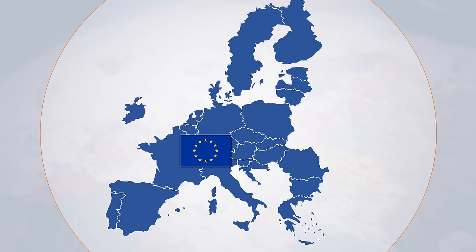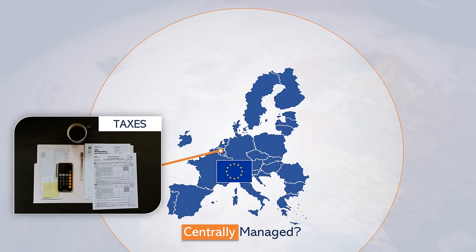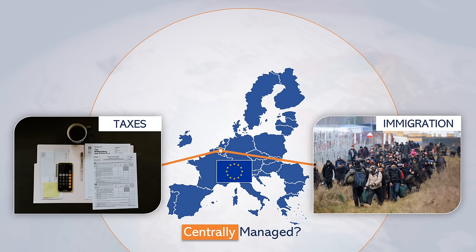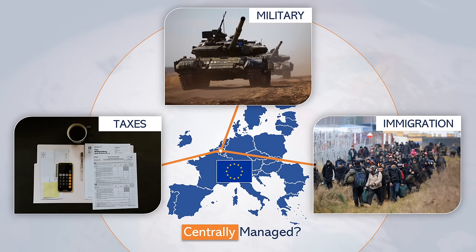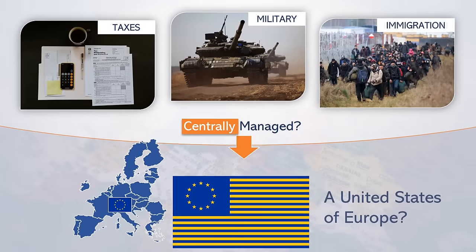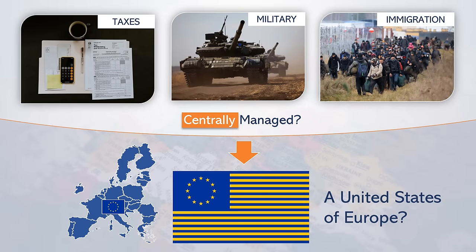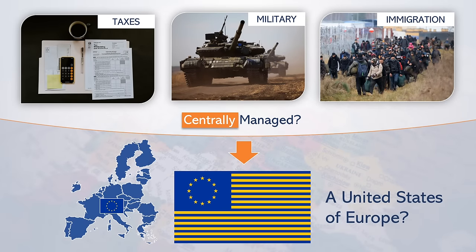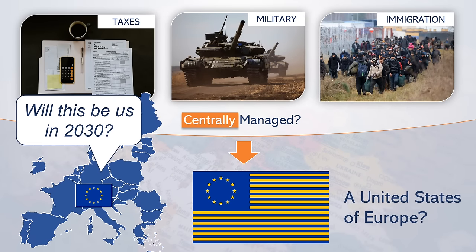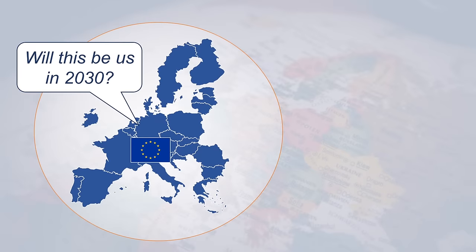An EU-wide common tax code, an EU-wide common immigration policy, or even an EU-wide common army. In other words, a United States of Europe. Is this the future the EU is heading towards? And if it is, what political model would work best?